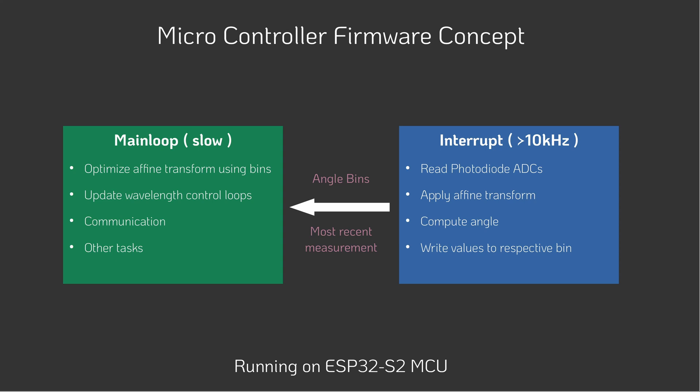On the microcontroller, the algorithm is divided into two parts. The first runs within a timer interrupt, capturing data in real time and computing the current phase angle. The second runs in the main loop, handling the more computationally intensive optimization of the affine transform.